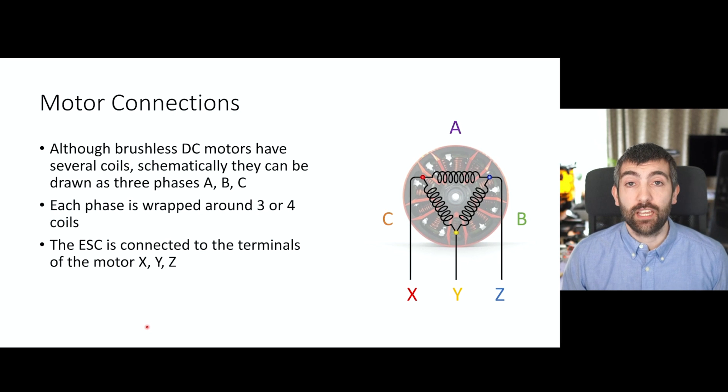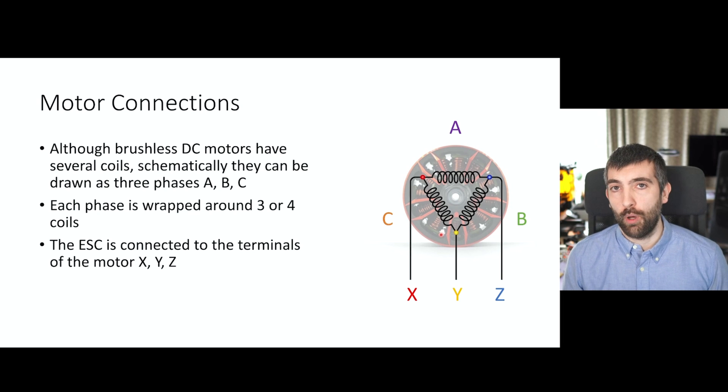Alright, before we dive into the depths of ESC commutation, I think it's important to first recap the motor connections to each of our brushless DC motors. Although every BLDC motor has several coils, schematically they can all be drawn as three phases A, B and C, drawn here in purple, green and orange. Each phase is then wrapped around three or four coils inside the motor depending on whether it's a nine pole motor, in which case each phase goes around three coils, or a 12 pole motor, in which case each phase is going to go around four coils. The ESC is then connected to the motor along the three motor wires X, Y and Z, and you can see that each of the terminals X, Y and Z is connected to two of the phases and it makes this sort of triangular diagram.